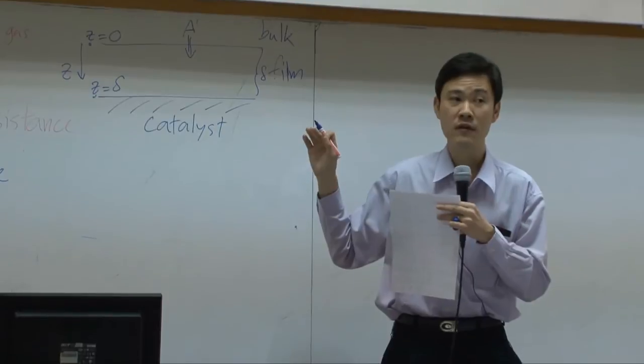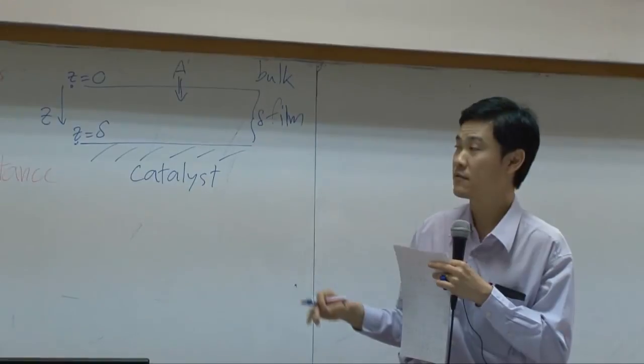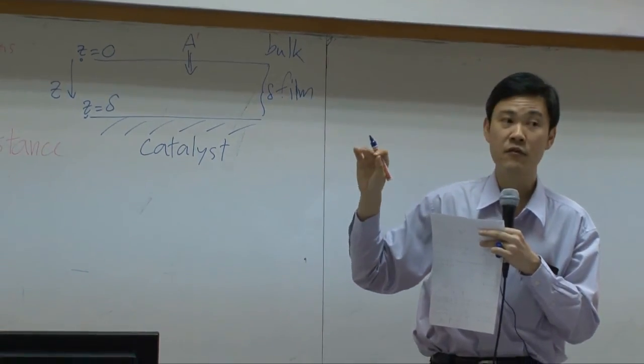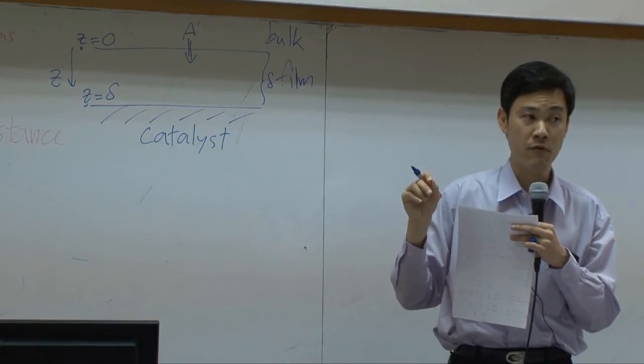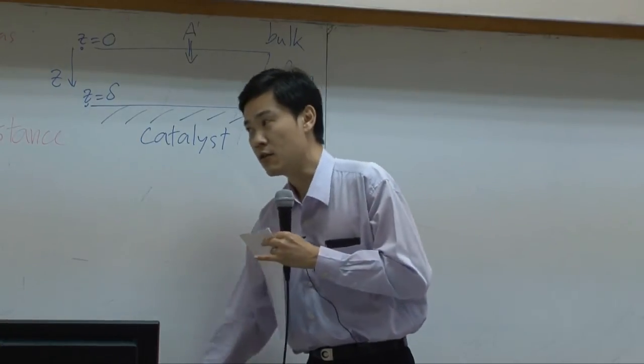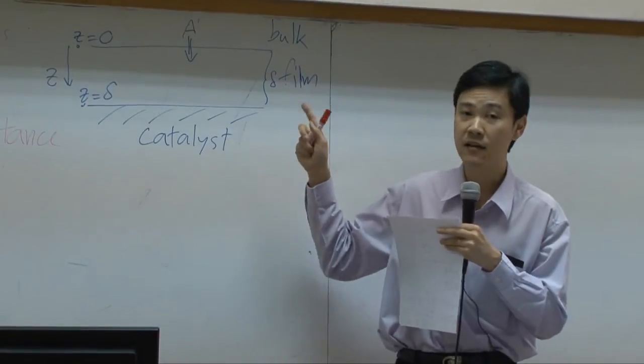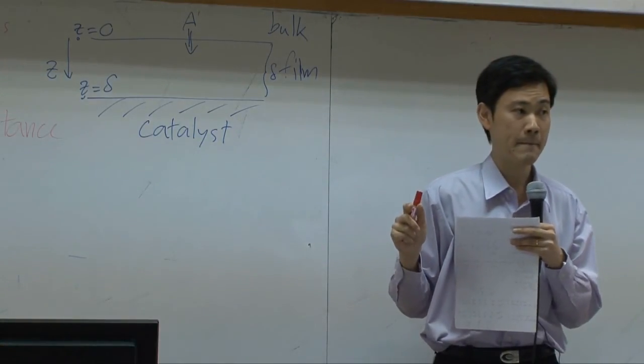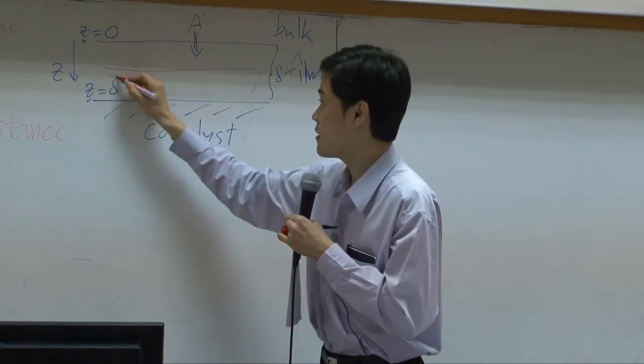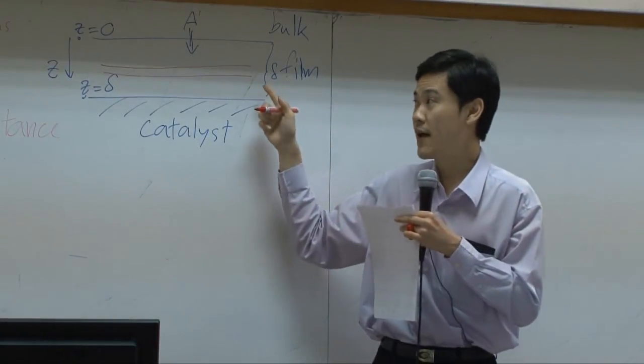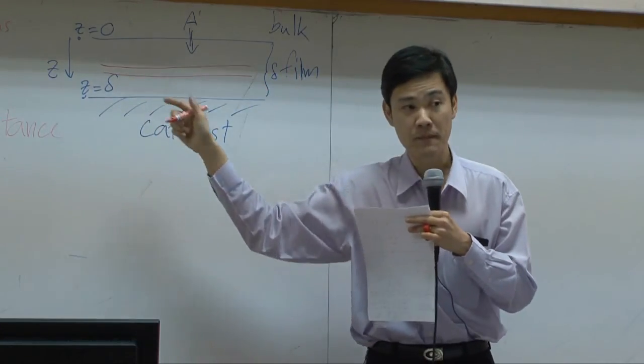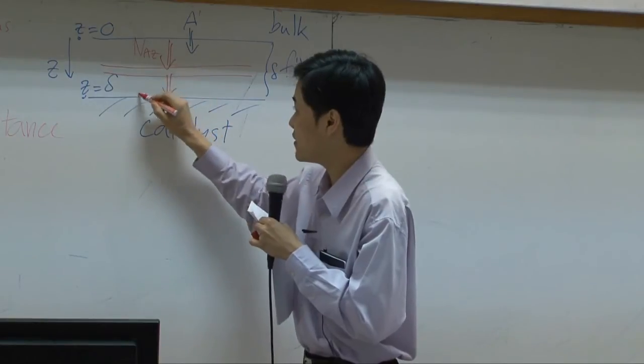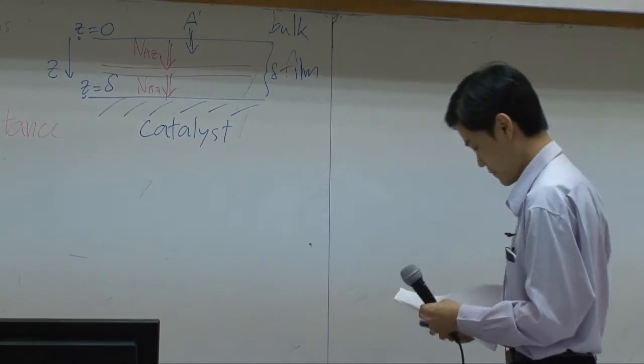Now, if we want to know the flux of A going into the catalyst, we should define the concentration profile of A within this thickness layer. And then, from that derived from the concentration profile, if you take differentiation of concentration profile, you can get the flux. So our first task would be finding the concentration profile within this film resistance. So what should our shell look like? It should be something like this. As long as you can assume concentration of A to be uniform along this direction, so flux of A going in and flux of A going out.